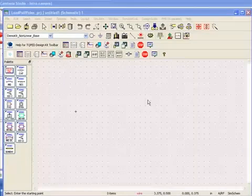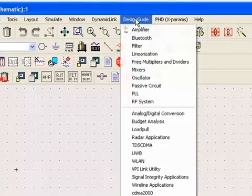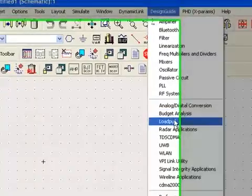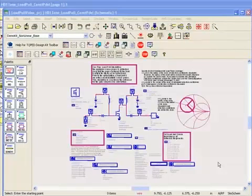In ADS, the easiest way to access these load pull simulation setups is to select Design Guide Load Pull. This brings up a load pull window, and we'll select one-tone constant power delivered load pull simulation. After clicking OK, a schematic and data display are copied into our project.